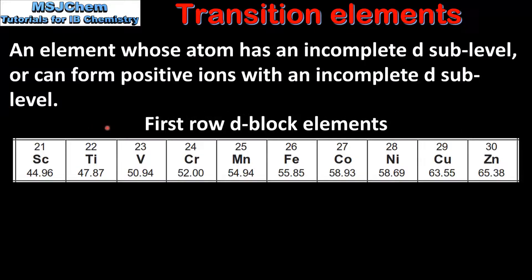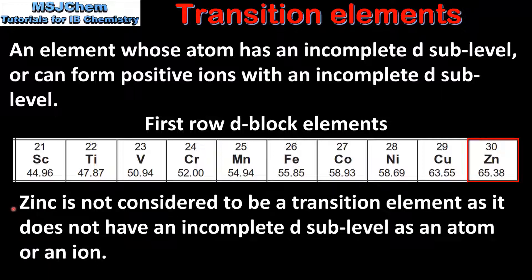Here we can see the first row D block elements — those are the elements from scandium to zinc. Of these first row D block elements, one of them is not classified as a transition element, and that element is zinc. Zinc is not considered to be a transition element as it does not have an incomplete D sublevel as an atom or an ion.